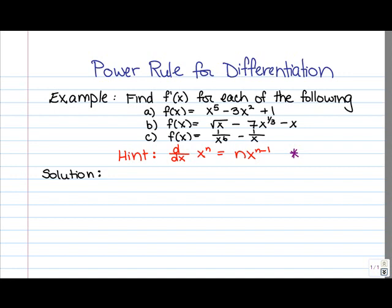So let's go ahead and have a look at the solutions. First of all, for part a, we've got f of x equals x to the 5 minus 3x squared plus 1. So what that means is that the derivative is going to be, let's just go ahead and differentiate term by term. For x to the 5, we're going to bring the 5 down, and we're going to reduce the power by 1. So we get 5x to the 4.